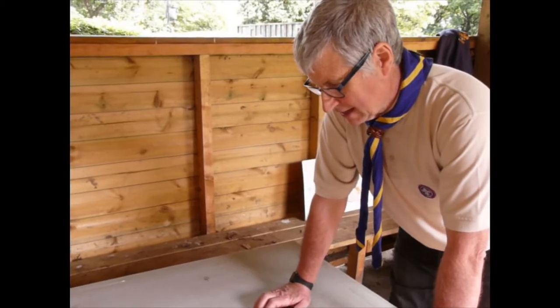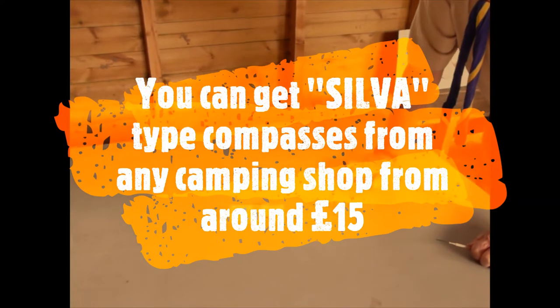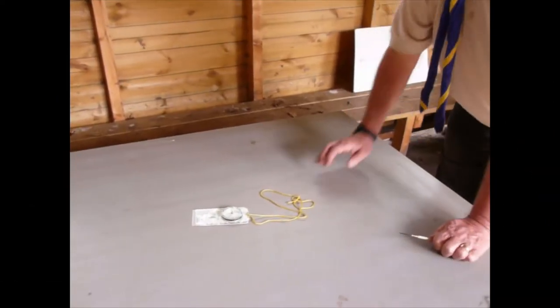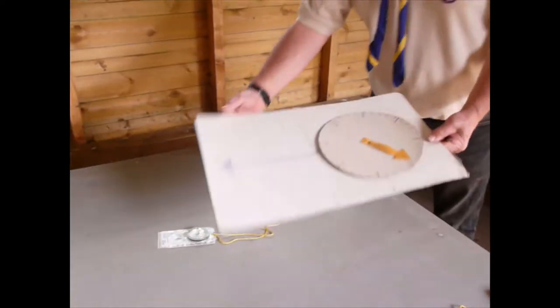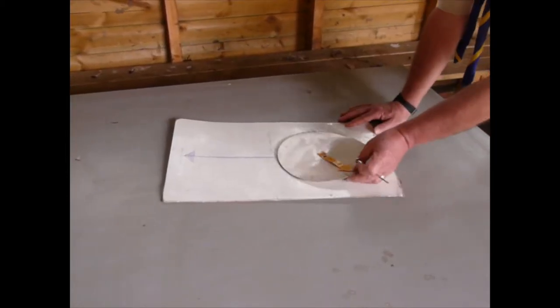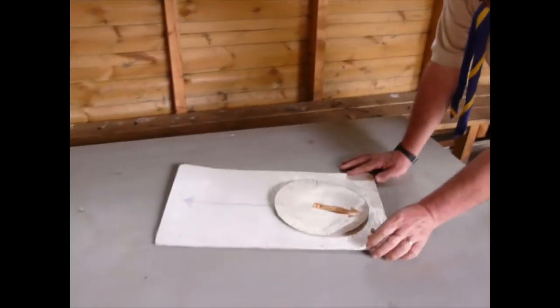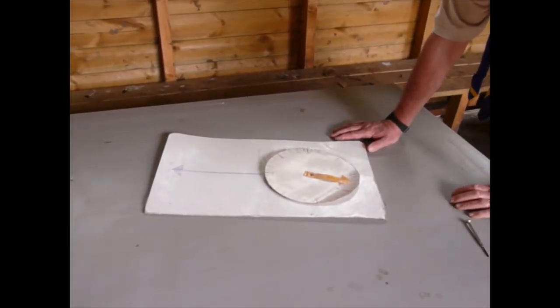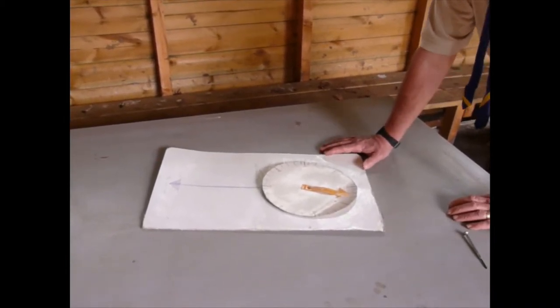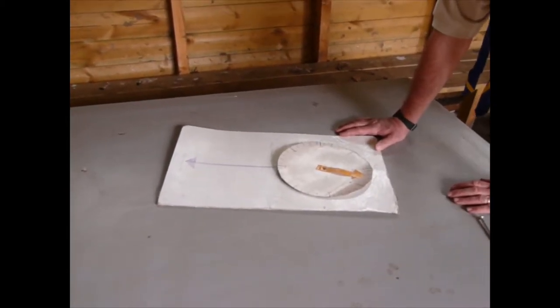One of the things we did when we were quite early on in our scouting career was we made a giant version of this in card. This is just made of a bit of laminated card, and it's quite useful when you're talking with a large group of young people because when they've got the compass in their hand you can show this to them.